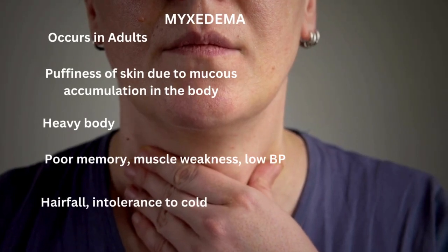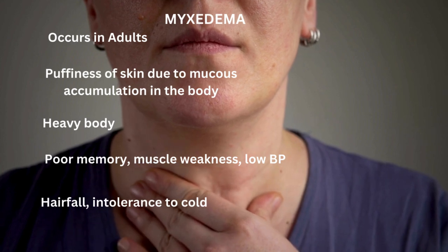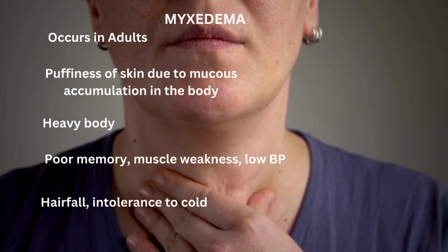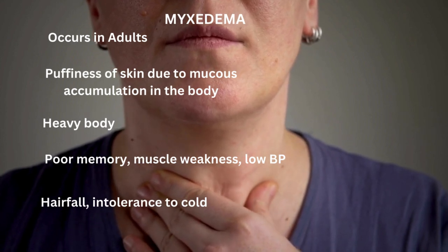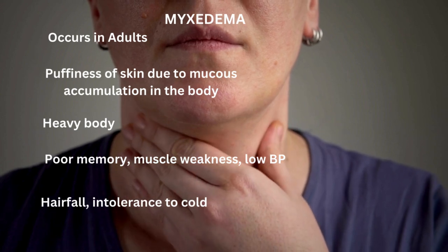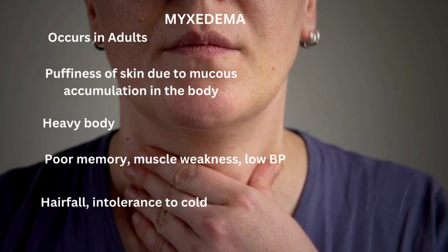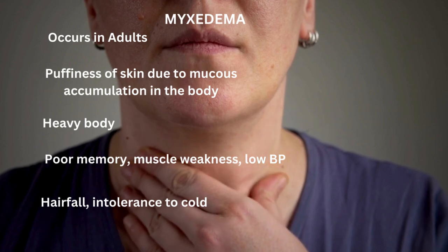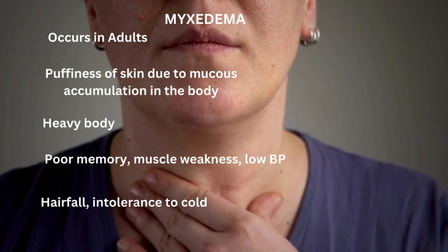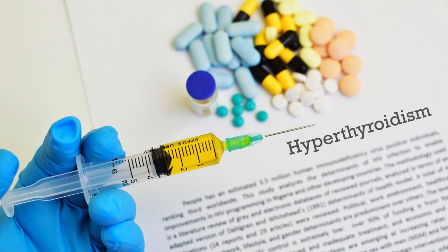In adults, hypothyroidism causes myxedema, characterized by puffiness in the skin due to mucus accumulation, heavy body, poor memory, muscle weakness, low blood pressure, hair fall, and intolerance to cold. These are all symptoms of myxedema, which mainly occurs due to hypothyroidism. These are the reference range levels of thyroid stimulating hormone.